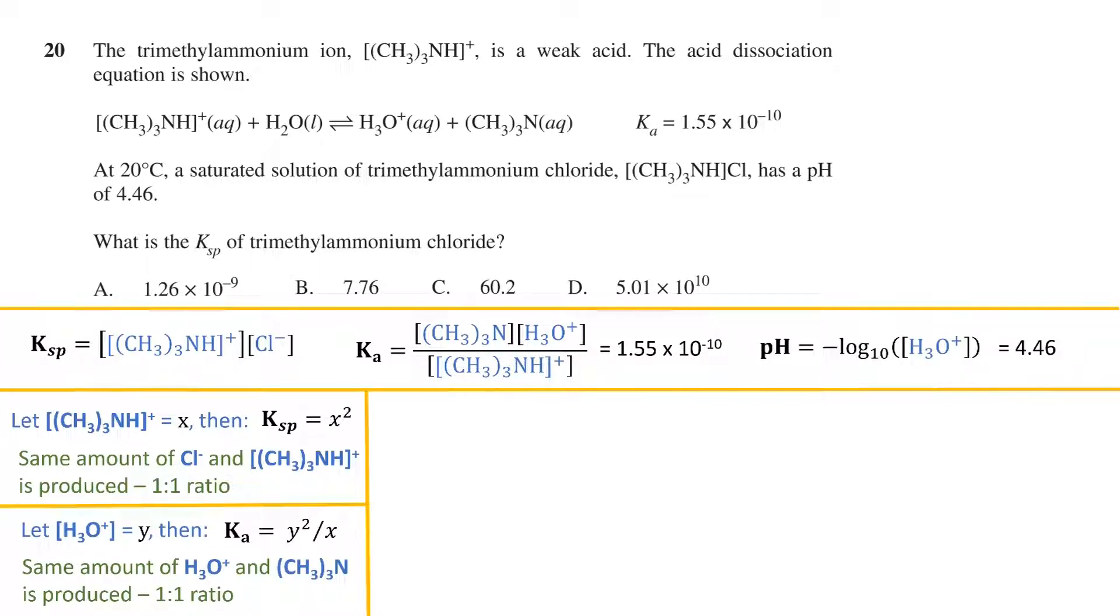We can now use the formula for pH and substitute in the Y variable. Rearranging, we get this. As we have a value for the pH, Y is now a concrete number. We can do something similar with the Ka formula, as we have a concrete value for that as well. We rearrange to make X the subject, and now the right-hand side only contains variables which we have values for.